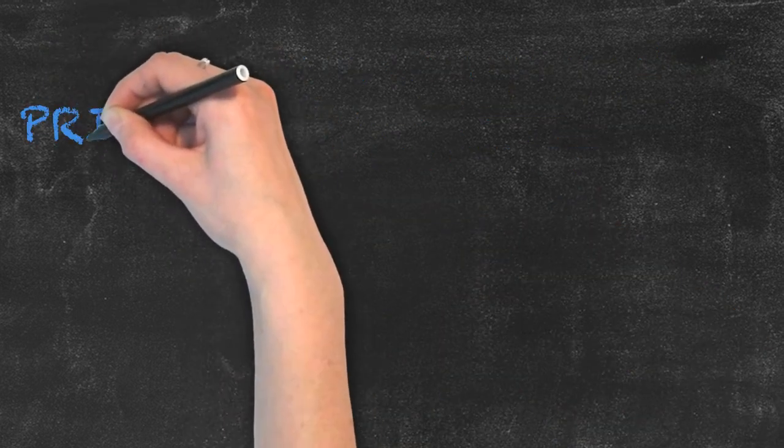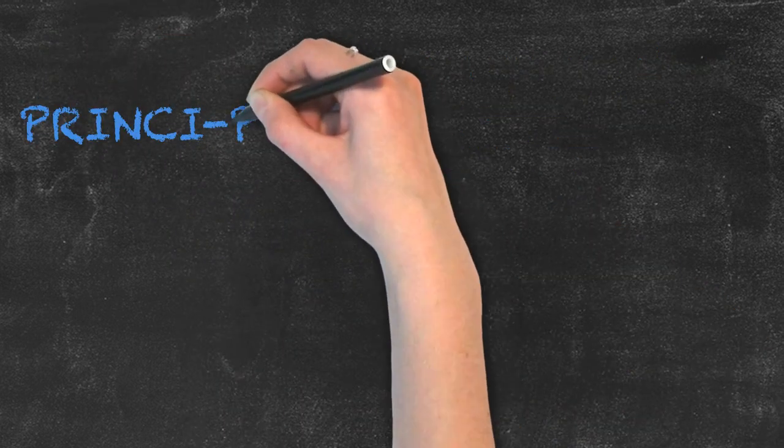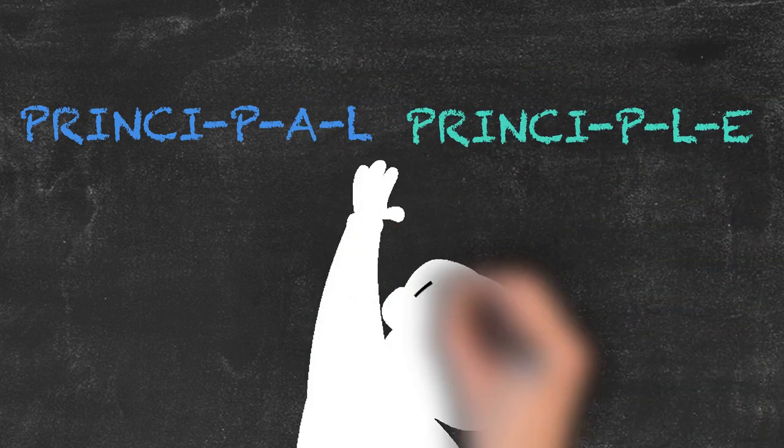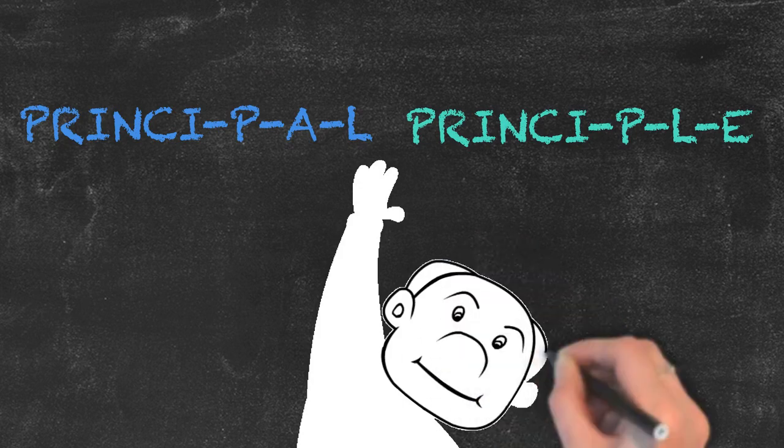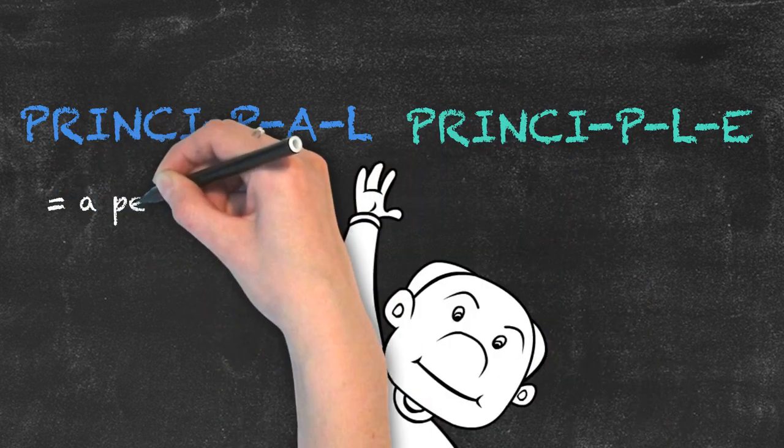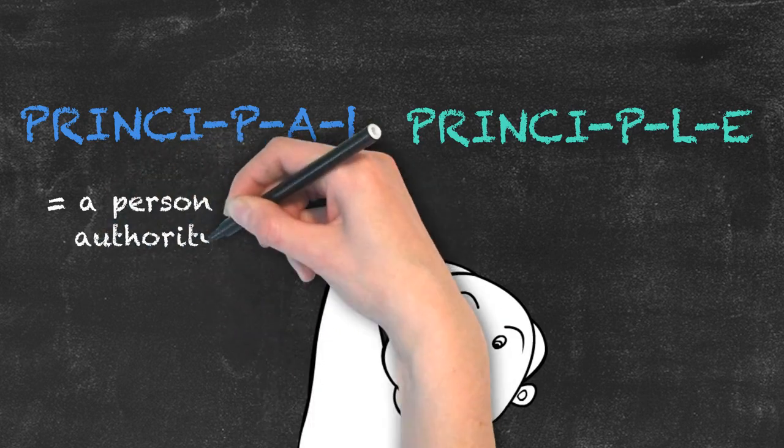You can easily remember the difference between the two words by looking at the last three letters of each word. A principal, ending in P-A-L, can be seen as your PAL. But a principle, ending in P-L-E, or a standard, cannot be your PAL.